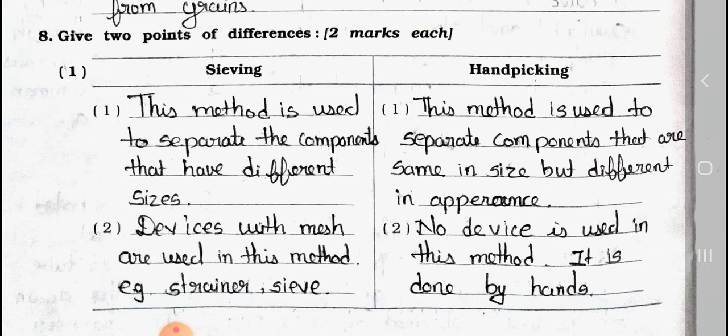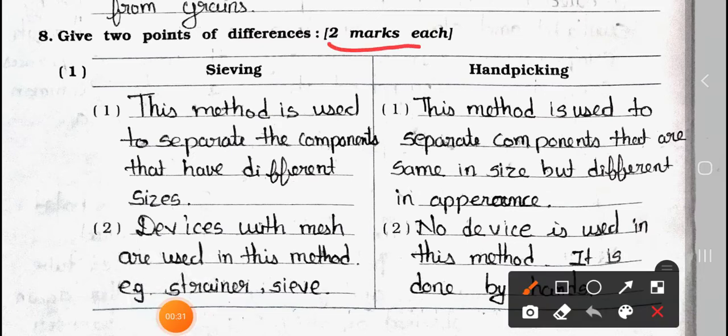In the previous 2 videos, we have seen part 1 and part 2. In the part 2 video, we have completed up to main 7. Today we will start from main 8: Give 2 points of differences. It carries 2 marks each.